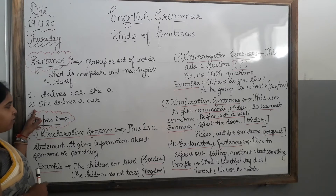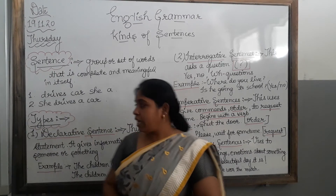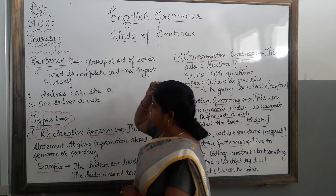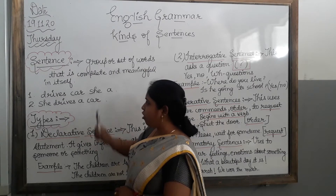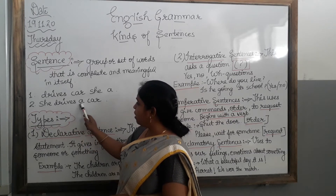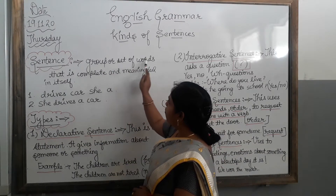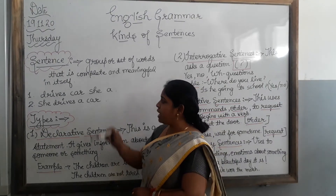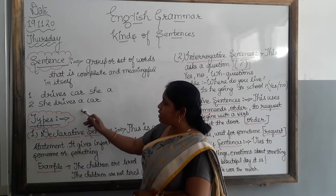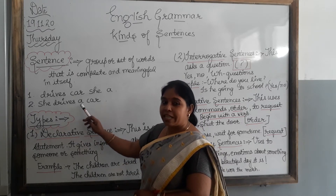First, I am reading sentence number one: 'Drives car she of.' As we read in the definition, a sentence is a group or set of words — so the first one is a group of words. Now reading the second one: 'She drives a car.' The second sentence is also a group or set of words. The second one is correct because this sentence gives a complete and meaningful meaning in itself.